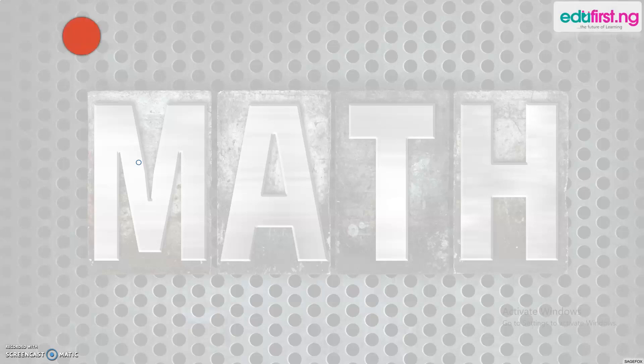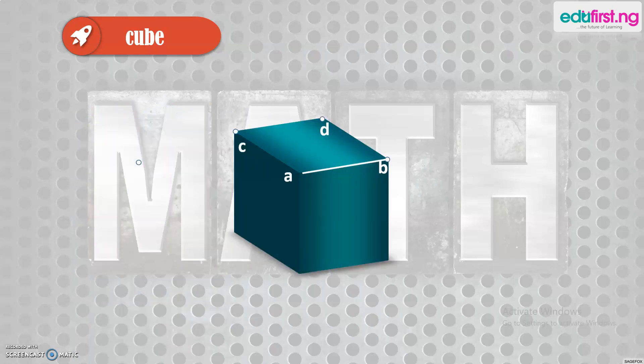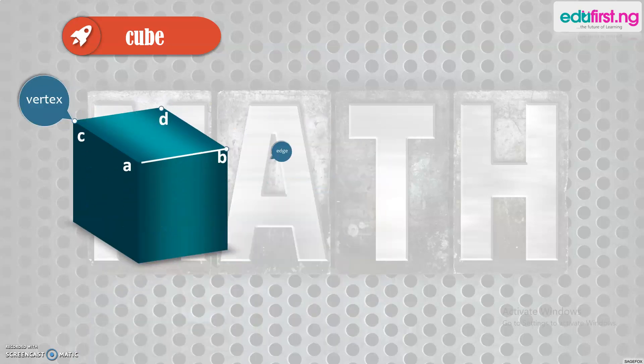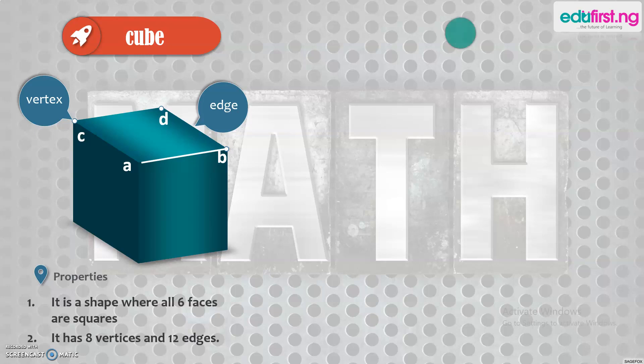First on our list of objects we have for today is a cube. Here's what a cube looks like — it has a vertex and an edge. We have several of them in our homes, like the Maggi cube and the sugar cube; these are examples of cubes. The properties of a cube are as follows: it is a shape where all six faces are squares, it has eight vertices and 12 edges.